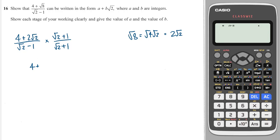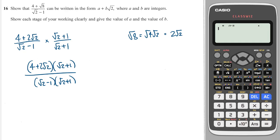The easiest way to do this is to write it as a double bracket on the top and as a double bracket on the bottom, and then just multiply it along. So we'll get 2 root 2 times 2 which is 4 root 2. We'll get 2 root 2 times 1, which is plus 4. We'll get 2 root 2 times root 2, which is 2 times 2 equals 4. And then 2 root 2 times 1, which is just 2 root 2.